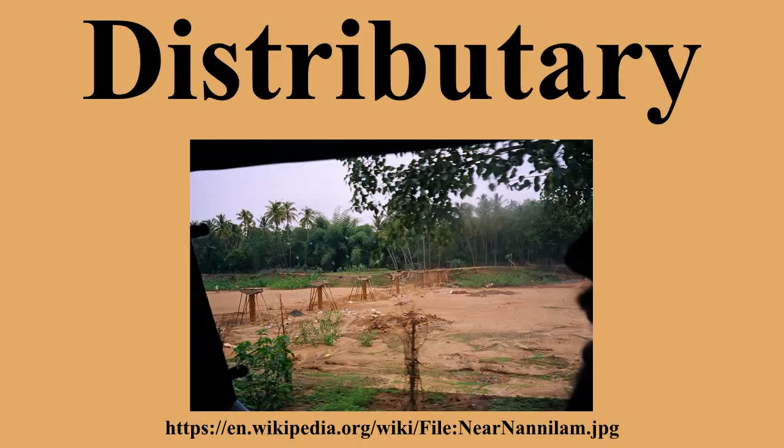In Europe, the IJssel, the Waal, and the Nederrijn are the three principal distributories of the Rhine. These are formed by two separate bifurcations within the Rhine-Meuse-Scheldt Delta. The Akhtuba River is a major distributory of the Volga.